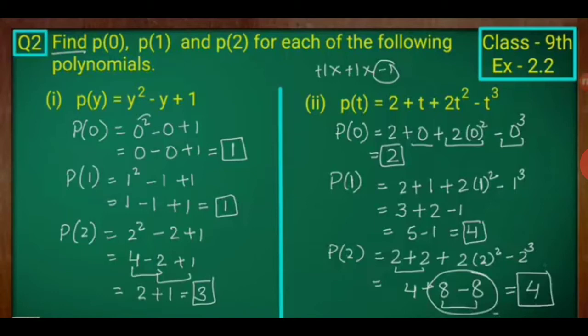p(0) equals to 0 squared minus 0 plus 1. 0 squared is 0, minus 0 plus 1, will be plus 1. When we find p(1): 1 squared minus 1 plus 1, that is 1 minus 1 plus 1, which equals 1. Now we find p(2): put y equals to 2. p(2) equals 2 squared minus 2 plus 1, which is 4 minus 2 plus 1, giving 4 minus 2 equals 2, and 2 plus 1 equals plus 3.